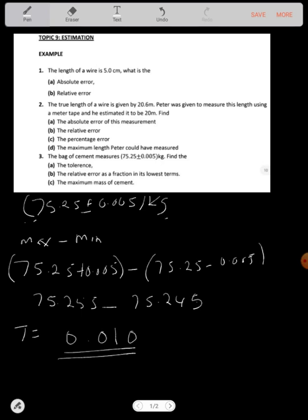So first you add, since there are two conditions, there's a plus or minus. Whatever you add will give you the maximum value. Whatever you subtract will give you the minimum. Then find the difference. 0.01 is your tolerance.